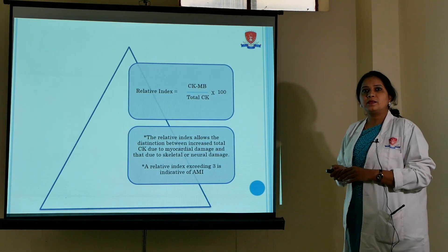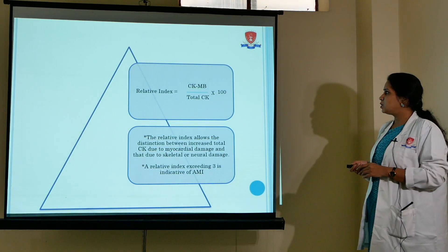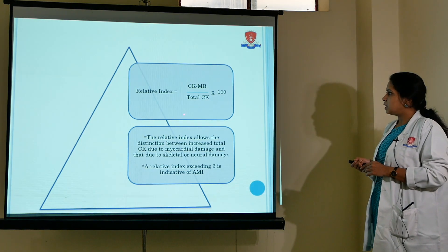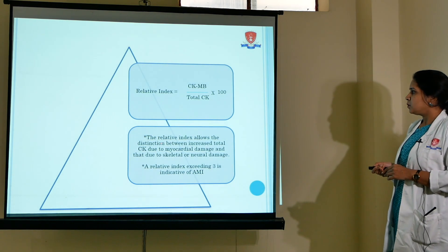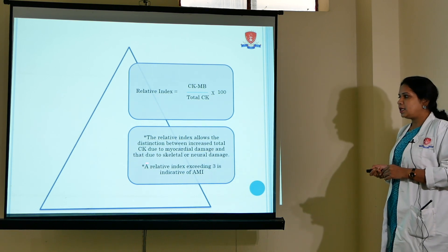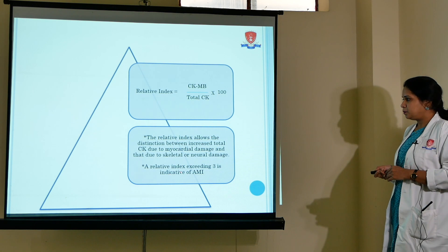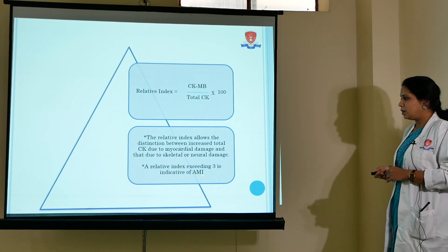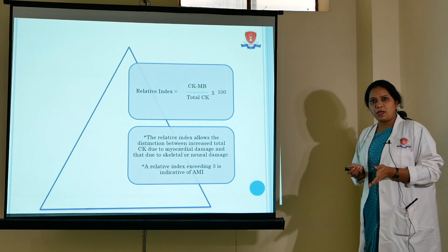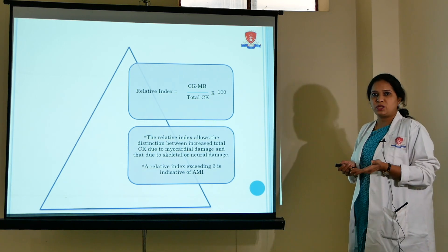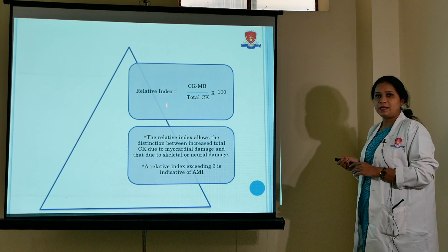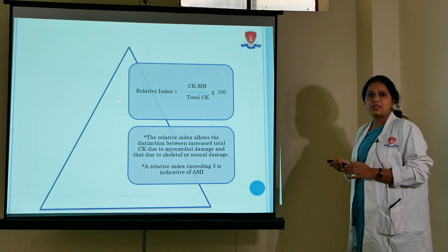Besides estimation of CKMB, the ratio of CKMB to total CK — called the relative index — is also important in diagnosing myocardial damage. It allows distinction between increased total CK due to myocardial damage versus skeletal or neural damage. A relative index exceeding 3 indicates acute myocardial infarction. This is particularly useful in trauma cases where a patient may have multiple injuries, helping confirm that a myocardial injury event has also occurred.